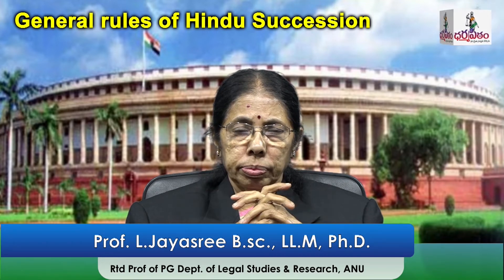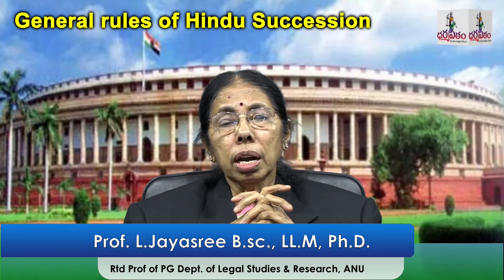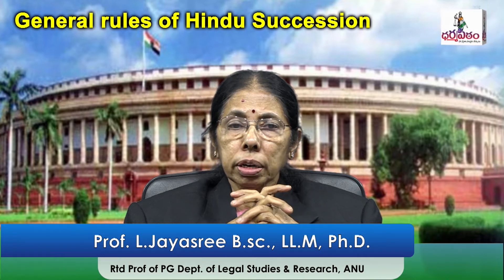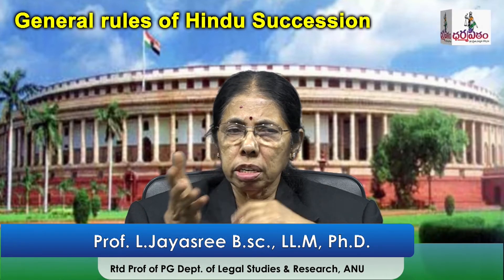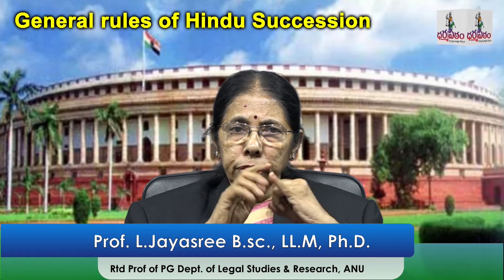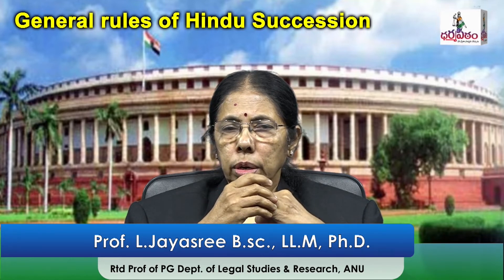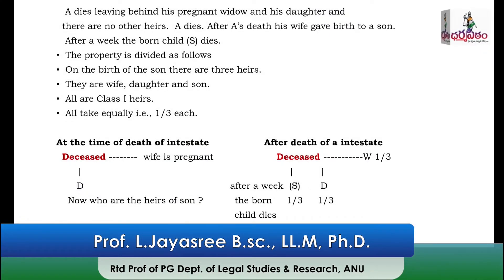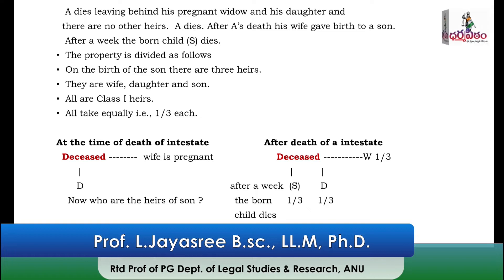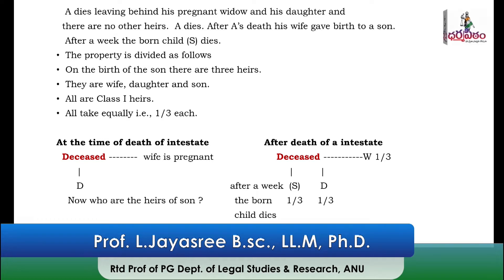A dies, leaving behind a pregnant wife and a daughter — only two heirs. A dies and there are only two heirs: one is the pregnant wife and the daughter. After the death of A, the wife gave birth to a son; subsequently the son was born.